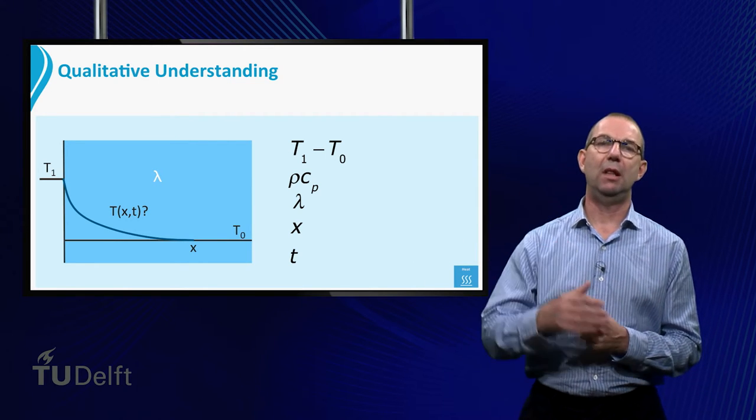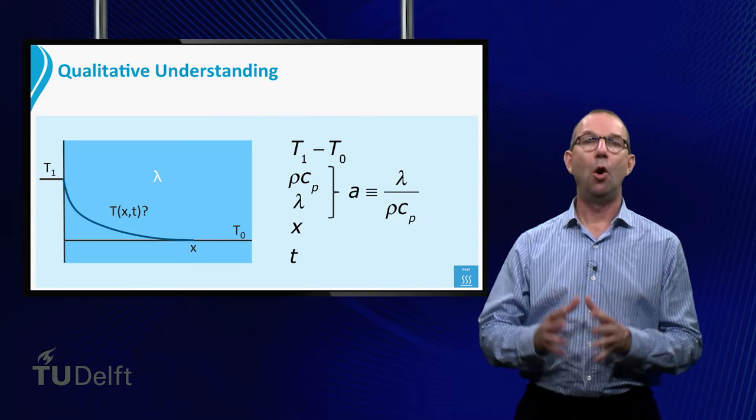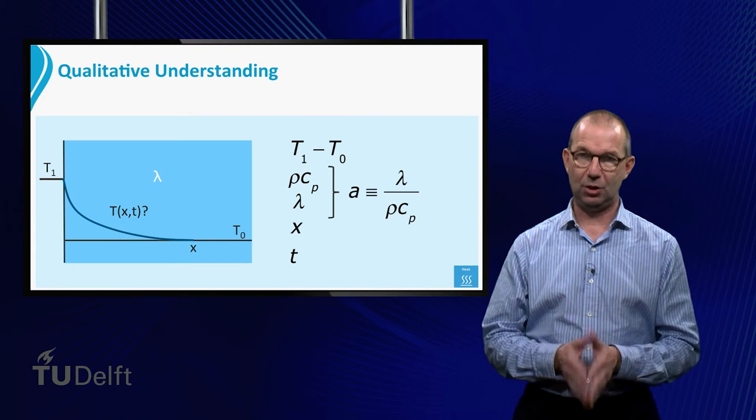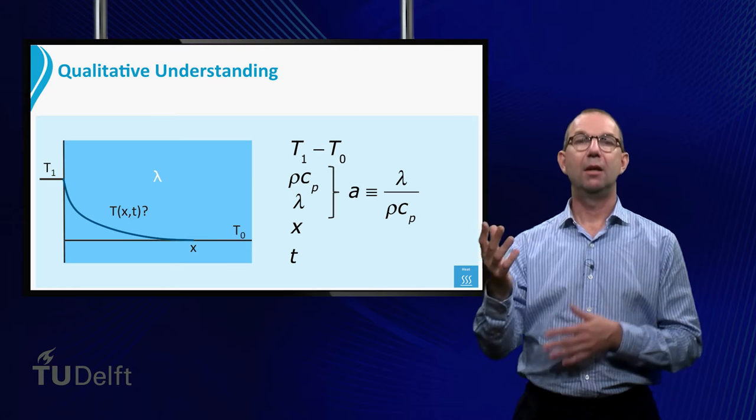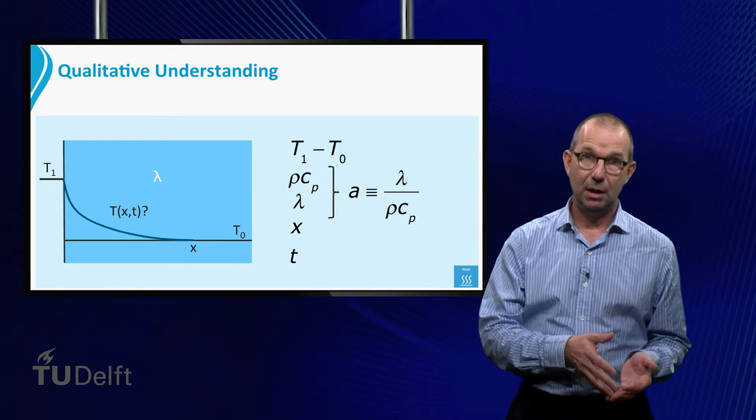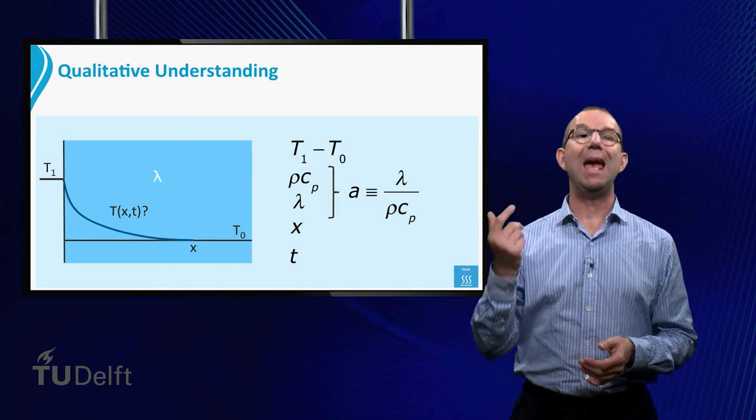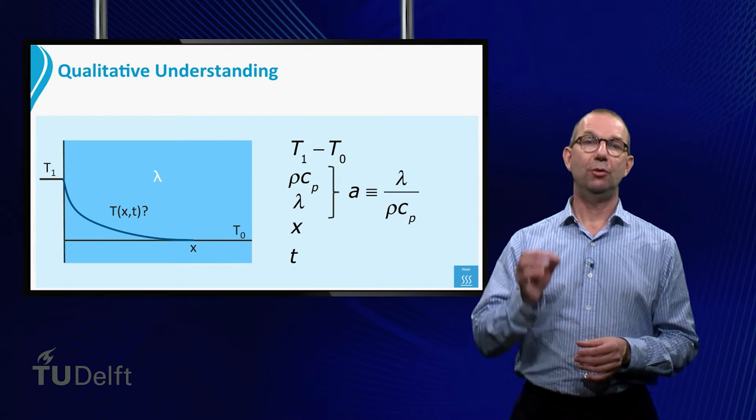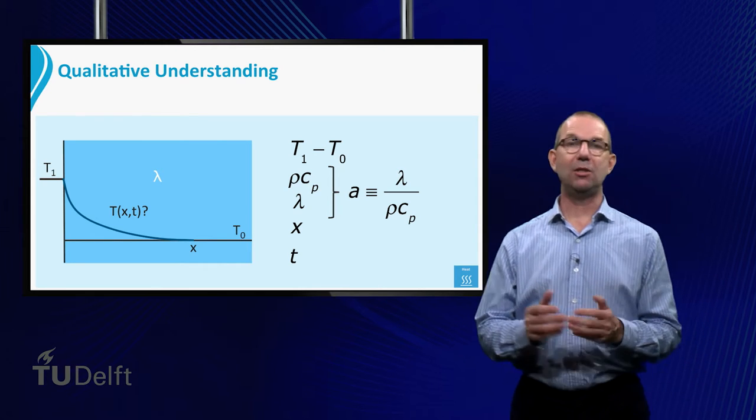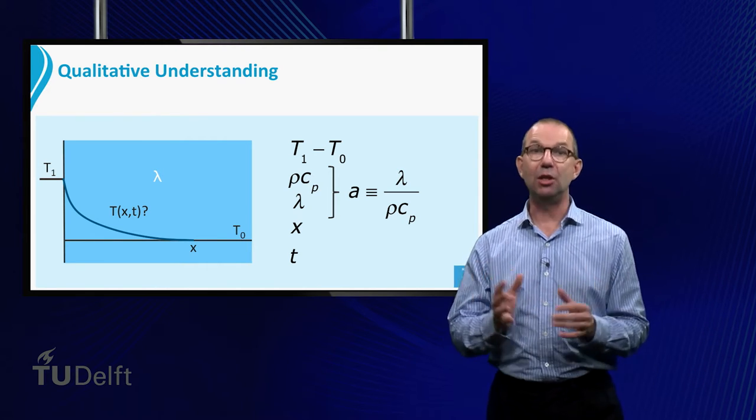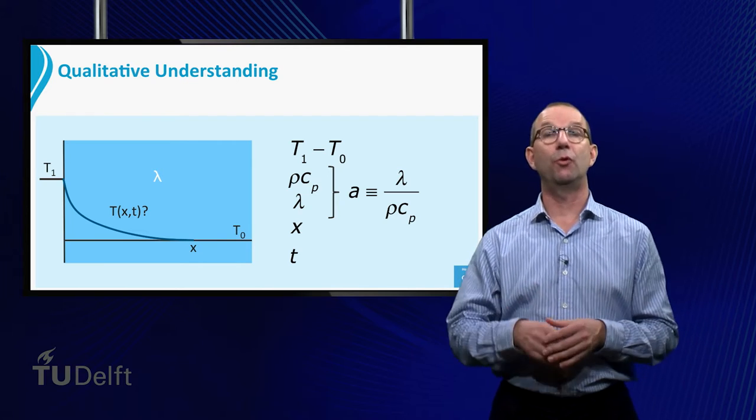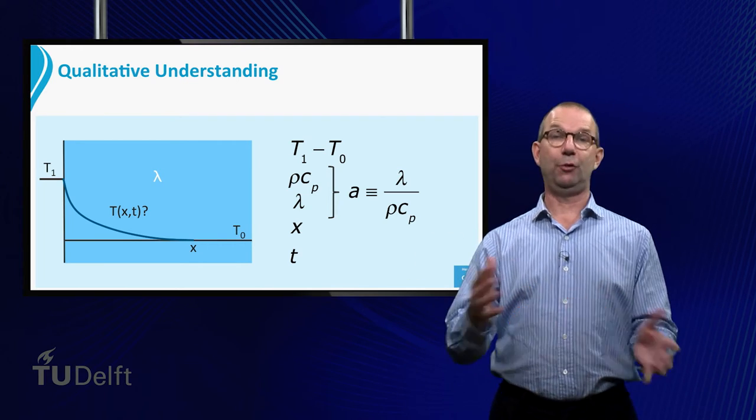It turns out that lambda and rho Cp always occur in a fixed combination, lambda divided by rho Cp. This is denoted by the letter A and it is called the thermal diffusivity. Actually it is much like the ordinary diffusion coefficient from Fick's law, but now for diffusion of heat.